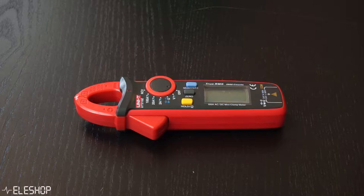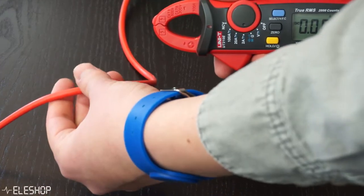A current clamp is an electrical device that can be used to measure alternating current and direct current flowing through a cable or wire.